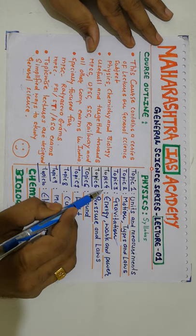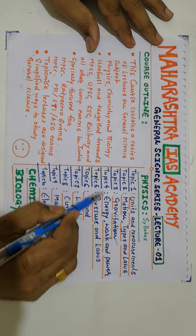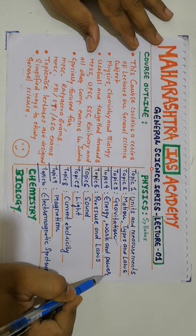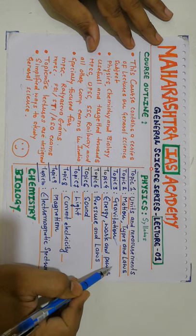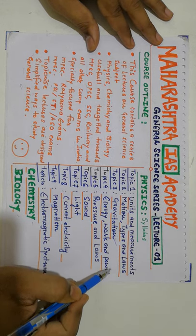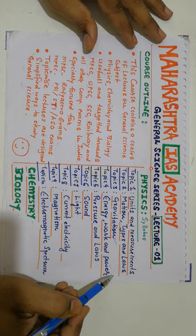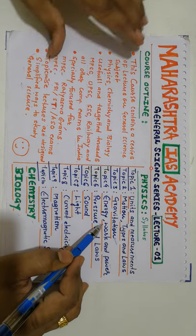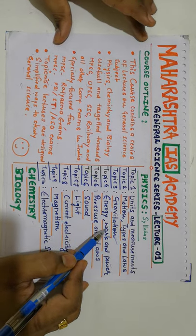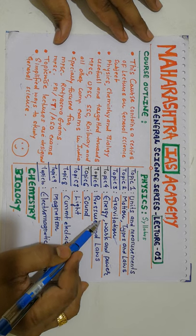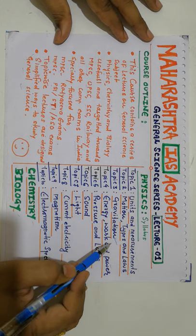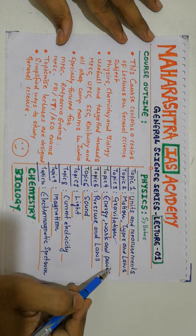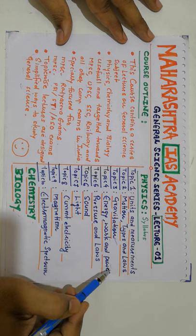Topic number 4 is energy, work, and power. This chapter covers the basic understanding of key concepts like the concept of energy, the types of energy — which could be potential or kinetic — the definition of work, definition of power, and the related calculations.